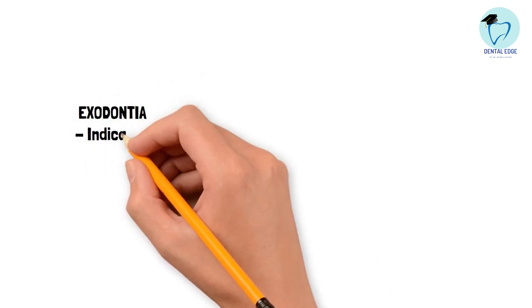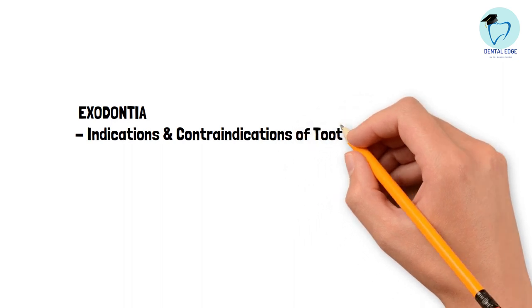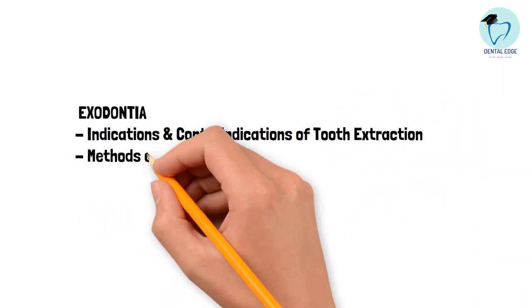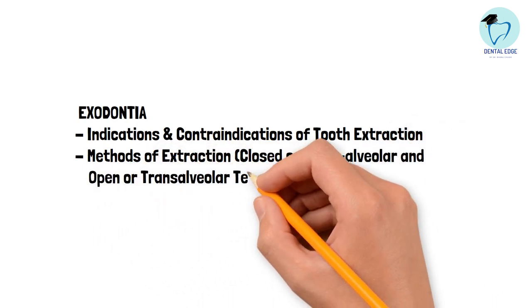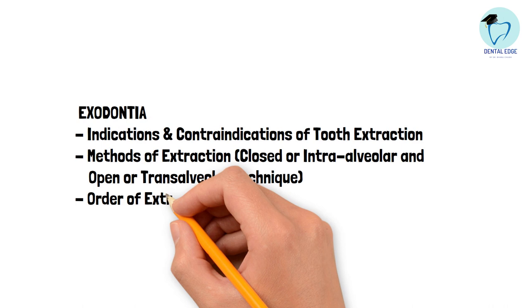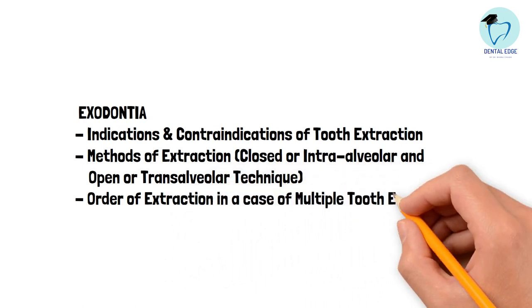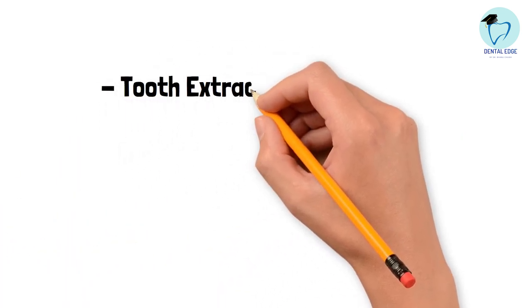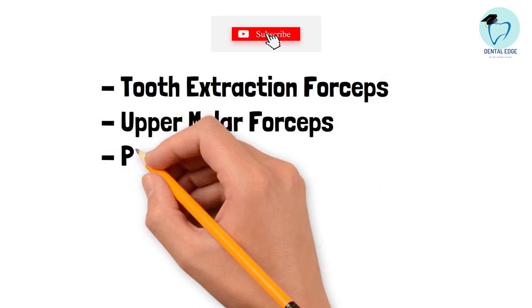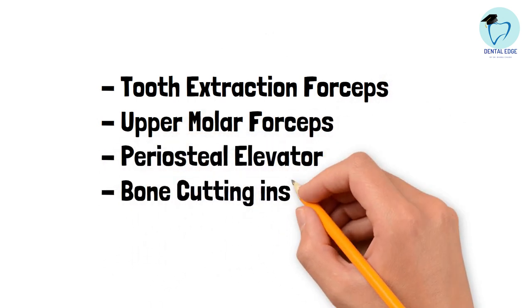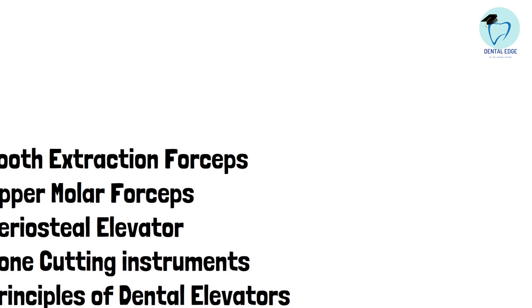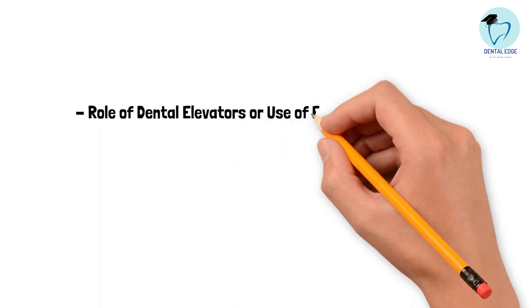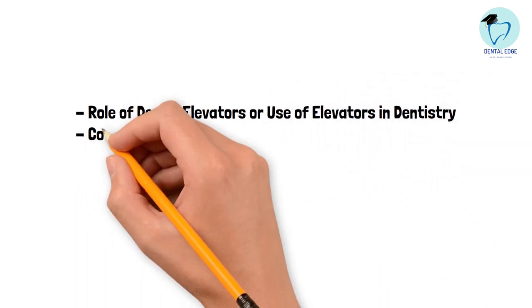From the chapter Exodontia, you can be asked to write about indications and contraindications of tooth extraction, methods of extraction. You can be asked to write about closed or intra-alveolar and open or trans-alveolar technique for tooth extraction, order of extraction in a case of multiple tooth extraction, tooth extraction forceps, upper molar forceps, periosteal elevator, bone cutting instruments, principles of dental elevators, and role of dental elevators or use of elevators in dentistry.